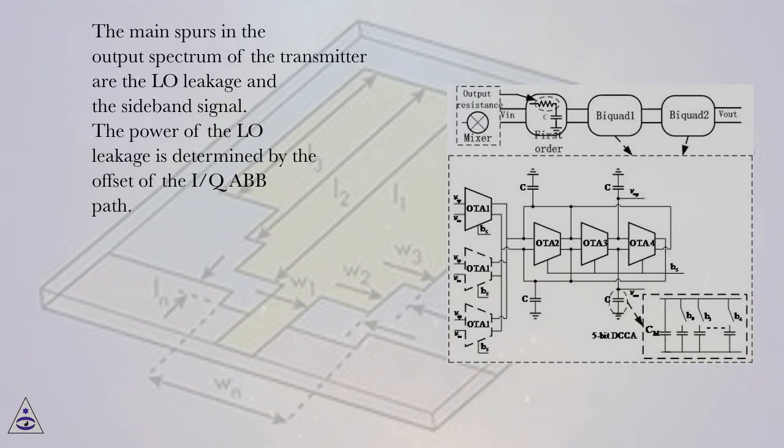The main spurs in the output spectrum of the transmitter are the LO leakage and the sideband signal. The power of the LO leakage is determined by the offset of the IQ ABB path.